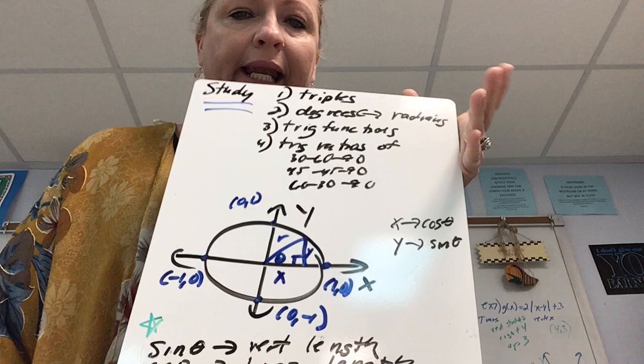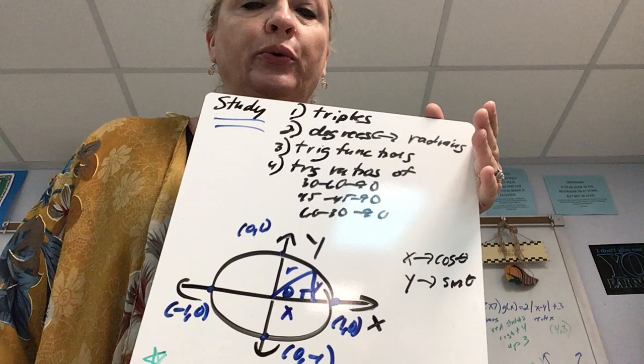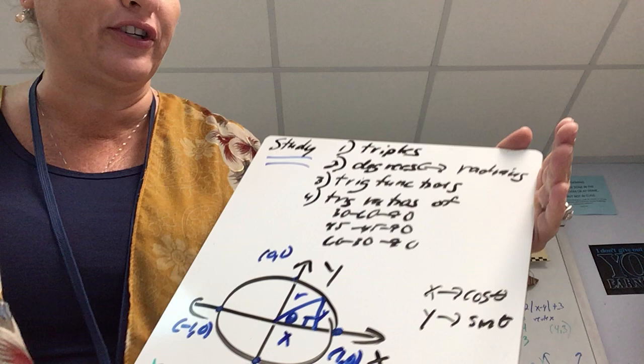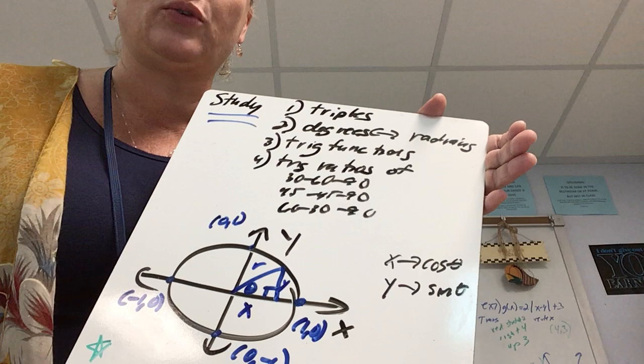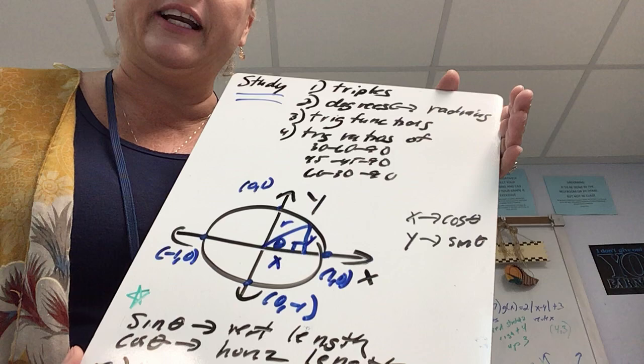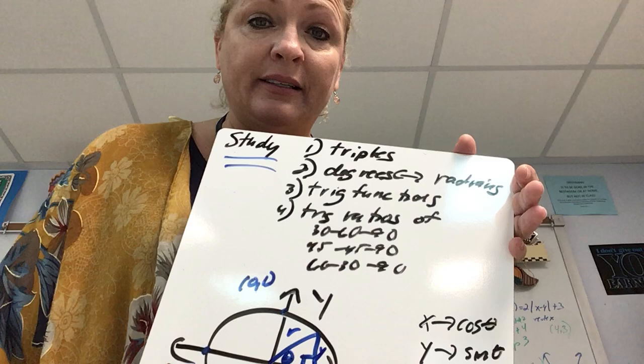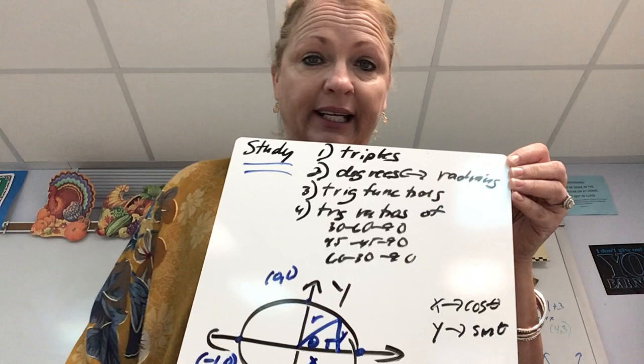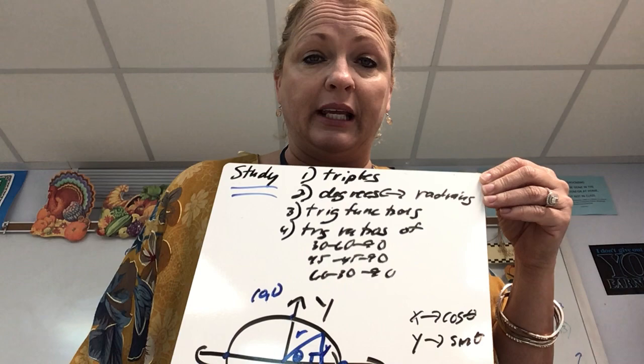We are adding more to our trigonometry foundation. Please study the following topics as they are the foundation. Review Pythagorean triples — you need to know five or six of those. Know how to convert angles between degrees and radians. Understand that sine and cosecant are reciprocals, cosine and secant are reciprocals, and tangent and cotangent are reciprocals. Know the basic trig ratios of a 30-60-90 and a 45-45-90 triangle, and how to set up all six trig ratios for each.